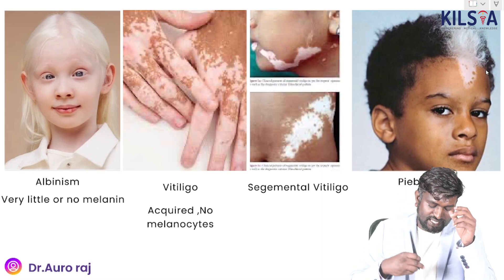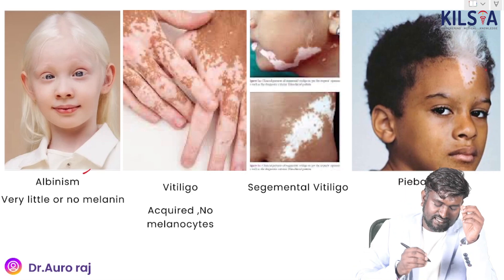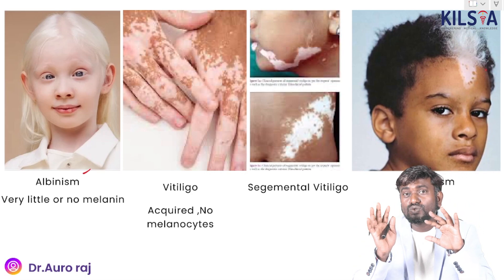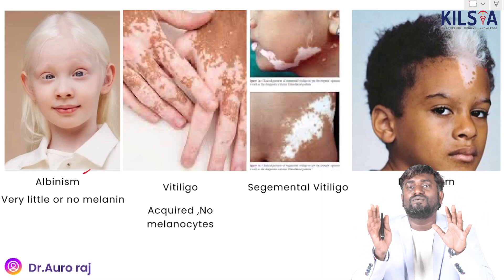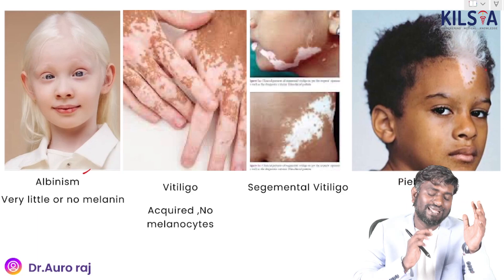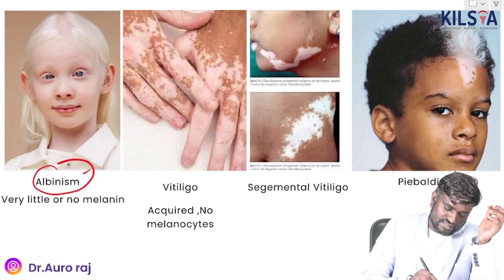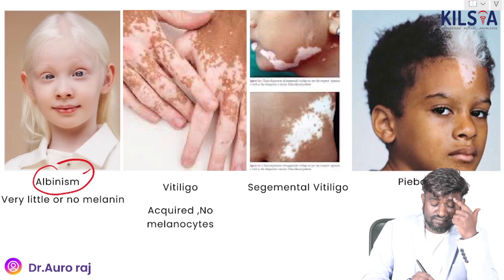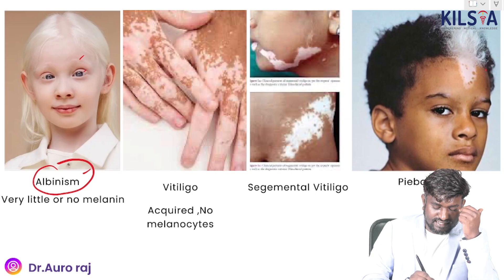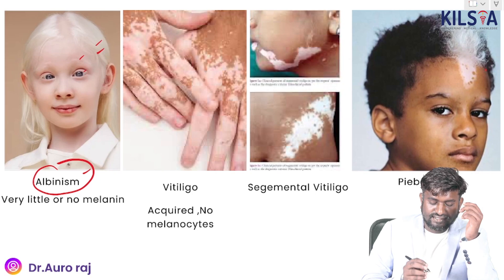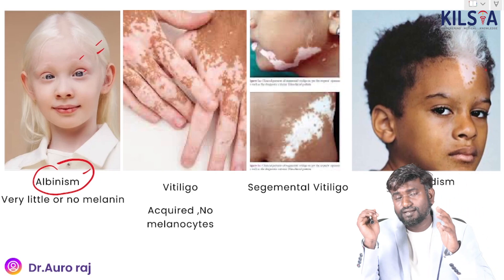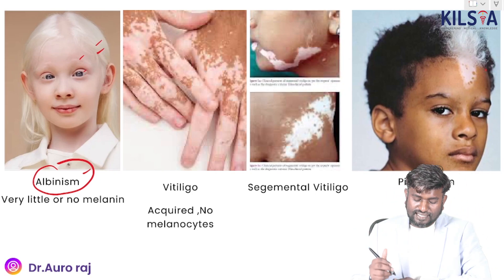The first image is albinism. In albinism there is very little or no melanin. Remember that in albinism the eyebrows, eyelashes, and eyes are all white in color due to the complete absence of melanin pigmentation.